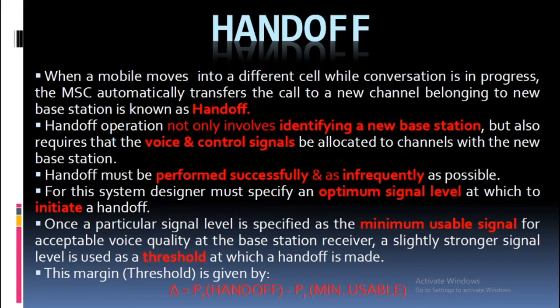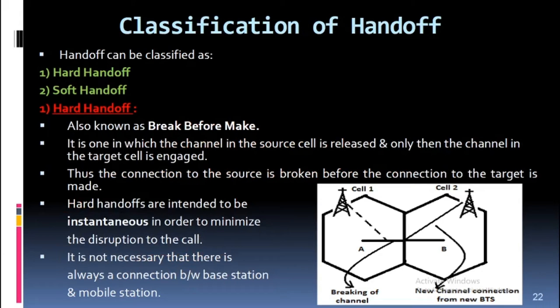Classification of Handoff — Hard Handoff: Also known as 'break before make,' it is one in which the channel in the source cell is released and only then the channel in the target cell is engaged. Thus the connection to the source is broken before the connection to the target is made. Hard handoffs are intended to be instantaneous in order to minimize disruption to the call. It is not necessary that there is always a connection between base station and mobile station during this process.